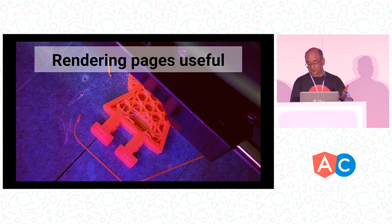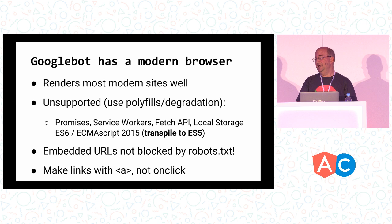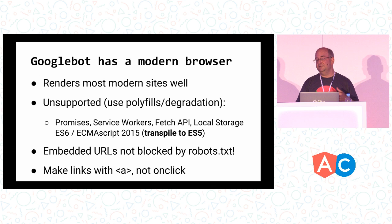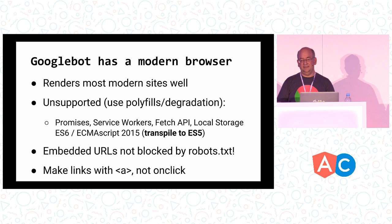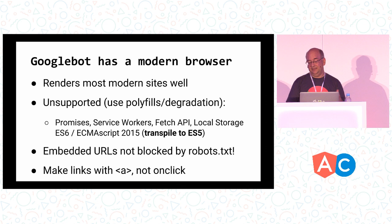Googlebot has gotten pretty smart at rendering pages, kind of like a browser with a fairly modern browser engine. It can render most modern websites well, but there are exceptions. Specific elements not currently supported include promises, service workers, fetch API, and local storage — and you can use polyfills to solve that. It doesn't make sense for Googlebot to run a service worker for every website, so we expect you to function well without service worker support. Polyfills, progressive enhancement, or graceful degradation techniques are good options here.